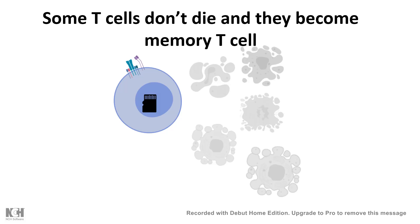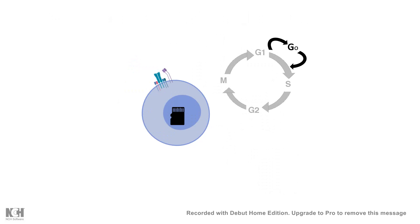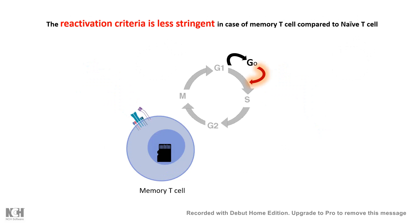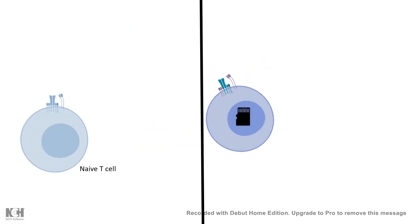These memory T cells reside in a quiescent state — that means they are in a G0 state and are not actively proliferating. However, from the G0 state they are poised and can re-enter the cell cycle at any time, proliferating and differentiating into effector cells. The problem is that both naive T cells and memory T cells are in G0 state. It turns out the reactivation criteria for re-entering the cell cycle is much less stringent for memory T cells — it is easier for a memory T cell to quickly re-enter the cell cycle and proliferate.